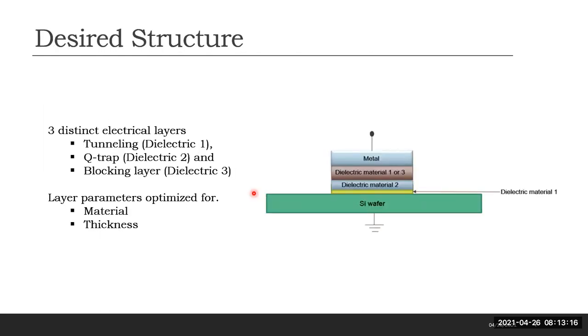Eventually, the gate oxide we are aiming for will have three distinct electrical layers: a tunneling layer to regulate the flow of electrons from substrate into oxide, a charge trap layer to store the electrons, and a blocking layer between the trapping layer and metal electrode to keep the electrons from flowing out. The layer's function will be affected by the thicknesses and materials used to make them.